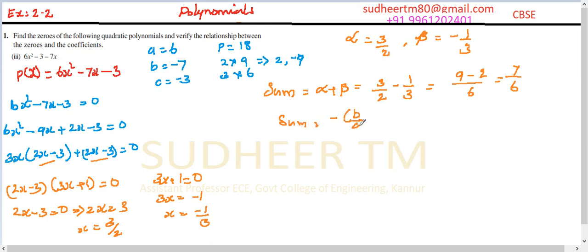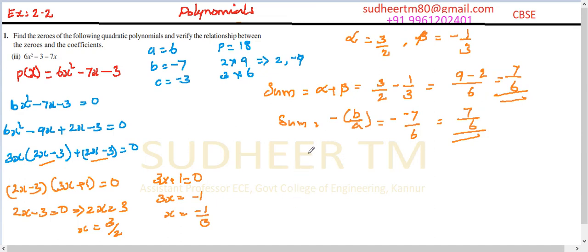Also, the sum by formula is equal to minus b by a, which equals minus of (minus 7) divided by 6, so that becomes plus 7 by 6. We found both by direct method and formula method that the sum is the same — both give 7/6.